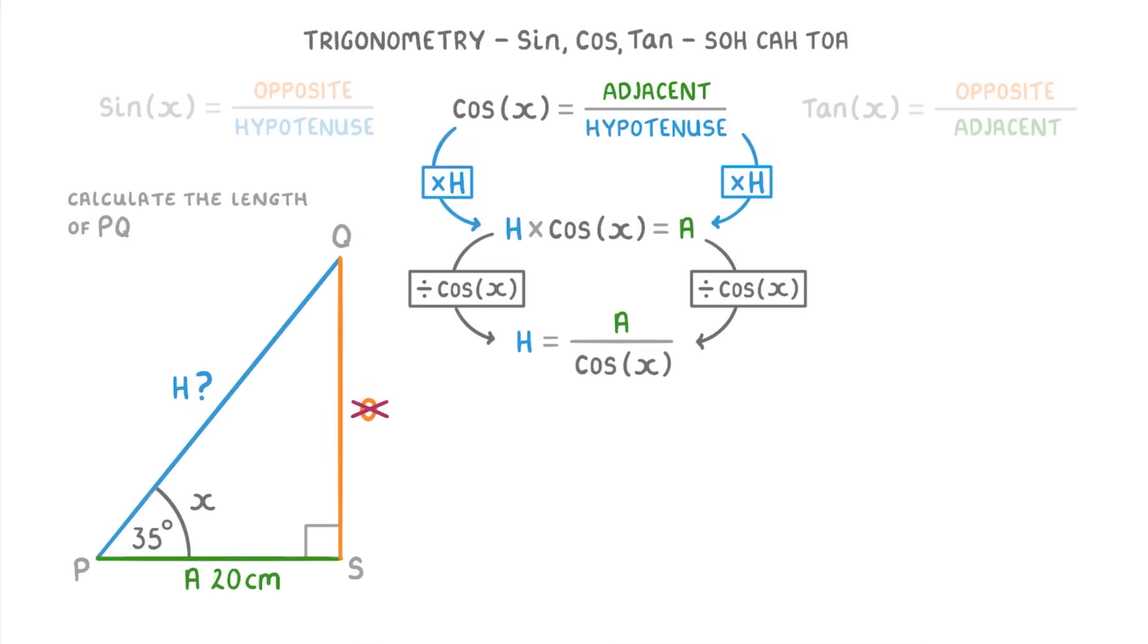Then the last thing we need to do is plug the numbers in. So H, the hypotenuse, is 20 over cos 35, which if you put it into your calculator should give you 24 centimeters. One last thing to mention is that if you ever get a calculator error in this sort of question, it could be because you didn't close the bracket after the angle. So just remember that after writing cos 35, you have to put this closing bracket.